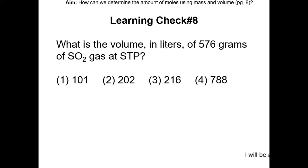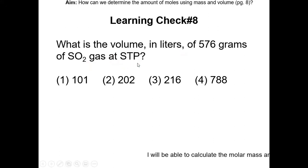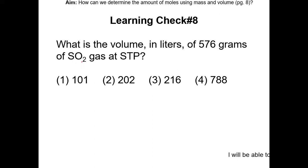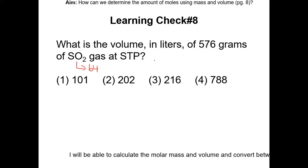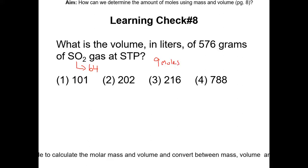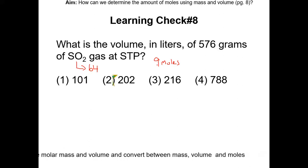Learning check number 8: what is the volume in liters of 576 grams of SO2 gas at STP? Pause the video and resume once completed. The first step is to figure out the GFM of SO2, which is 64. Next, figure out the moles: 576 divided by 64 is 9 moles. To find liters, do 9 times 22.4, which gives about 201.6 liters.